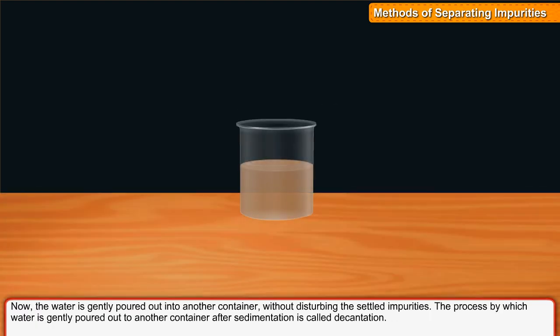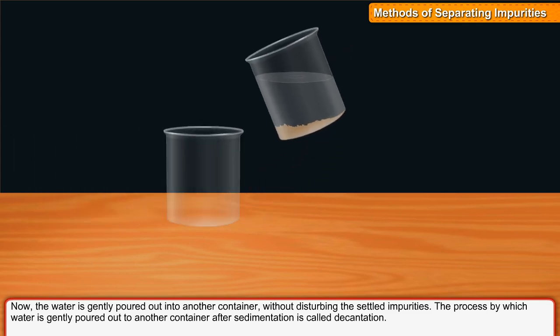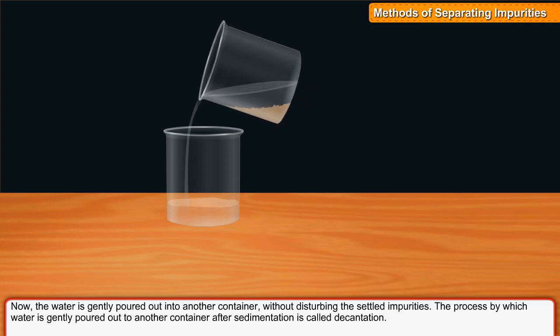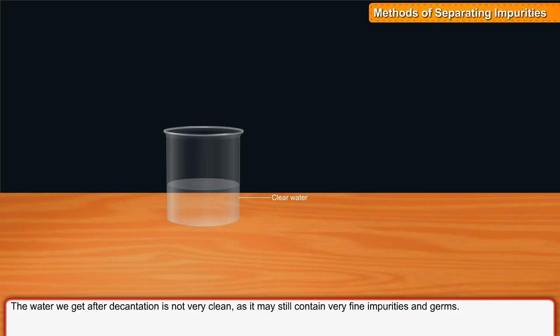The process by which water is gently poured out to another container after sedimentation is called decantation. The water we get after decantation is not very clean as it may still contain very fine impurities and germs.